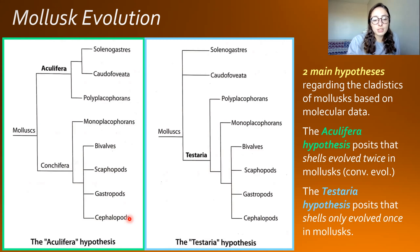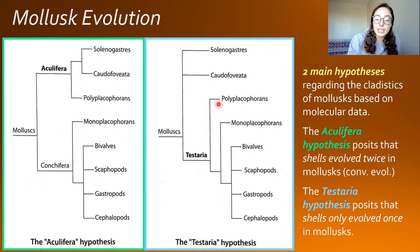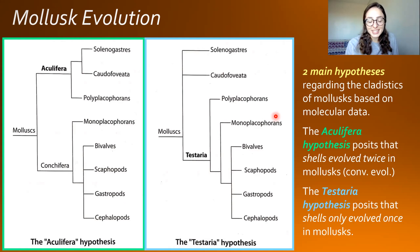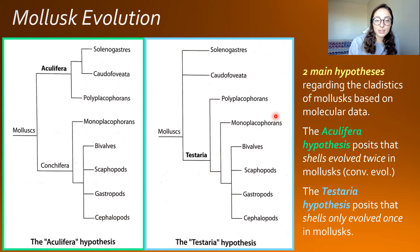In the Testaria hypothesis, all the shelled groups of mollusks are clumped together, having evolved first as polyplacophores, then monoplacophorans, then bivalves, scaphopods, gastropods, and cephalopods — all shells evolved just once and then diversified into different types, with the unshelled groups separate from the shelled groups. This is still up for debate, with quite a lot of evidence for both hypotheses. If you'd like to research mollusk evolution further, I encourage you to look into it.